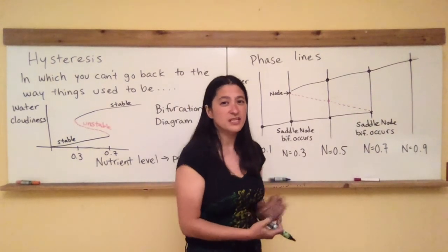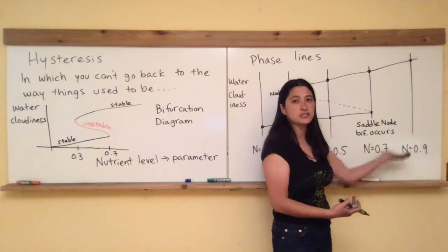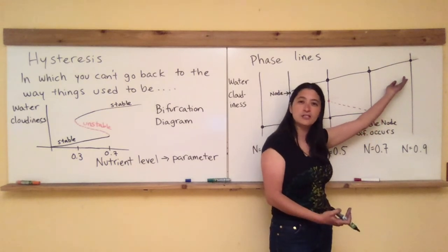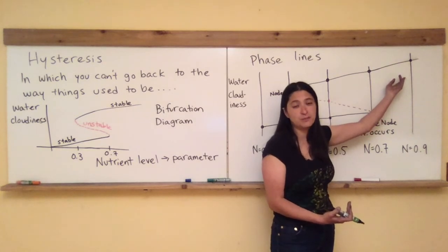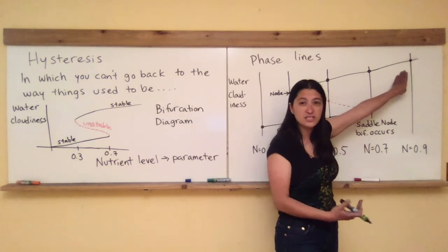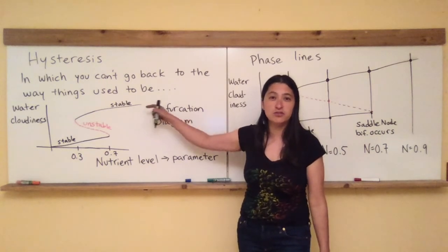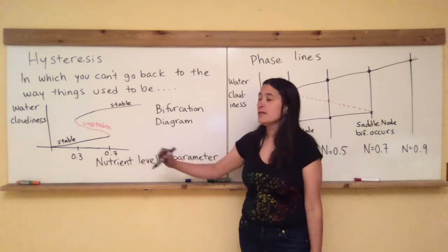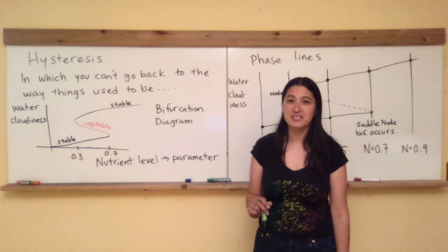Now for the sad part of the story. Let's say that you increase your nutrient level so much that all of a sudden your system has made this crazy switch and you have really, really cloudy water. Of course you'd be naturally inclined to try to take it back. You want to go back to the way things used to be where you're swimming around in that nice lake. So now you're up here because your nutrient level is so high and this is the only right here, the only possible stable steady state. And you think that if you decrease your nutrient level and you go back that way, you're going to go back to the way things used to be. But what I'm describing here is a phenomenon known as hysteresis in which you can't go back to the way things used to be.